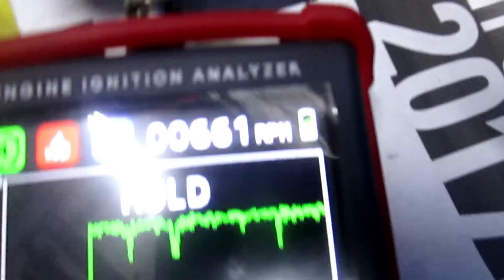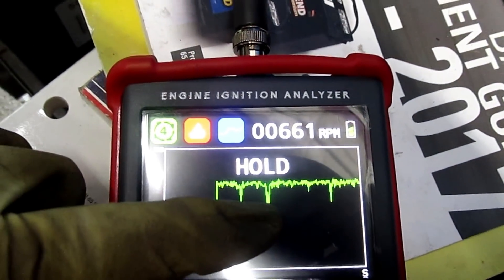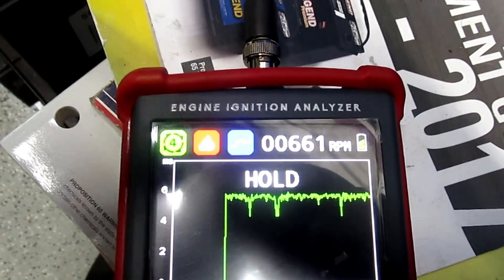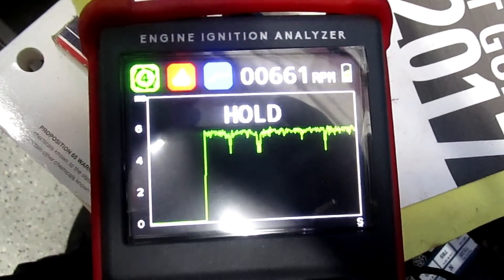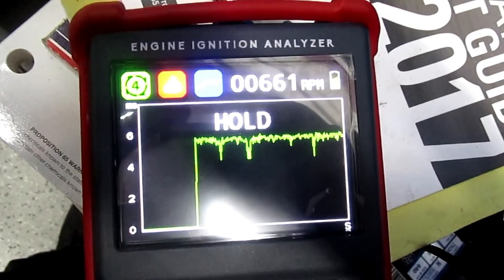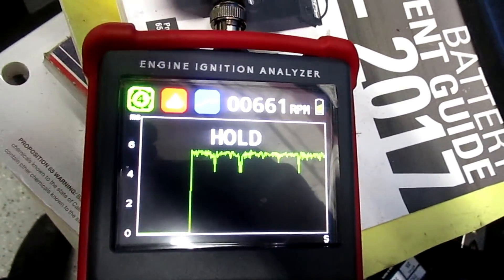So we can see on the waveform these little drops right here. There's three of them. When I hold it on a good cylinder you can see that it holds steady even when you hear the miss in the engine. So we found the coil that's intermittently acting up. It mostly acts up under load.